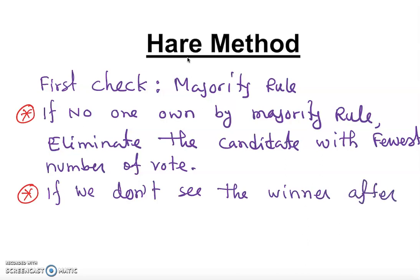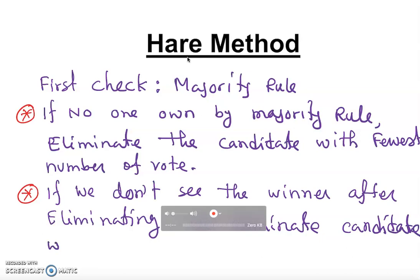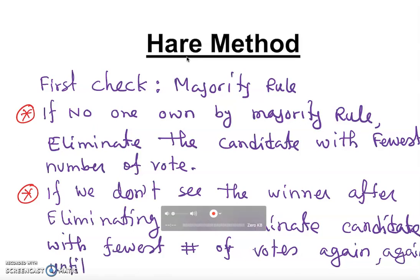After eliminating, we do the process again — eliminate the candidate with the fewest votes again and again, until we find a winner.